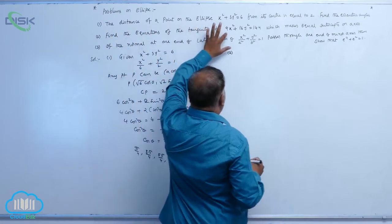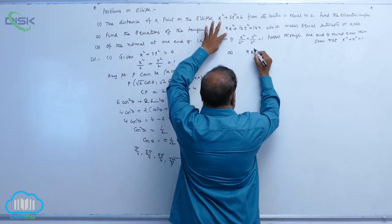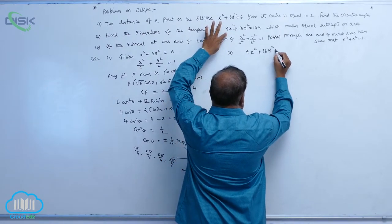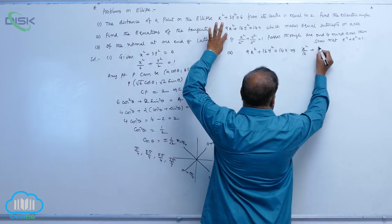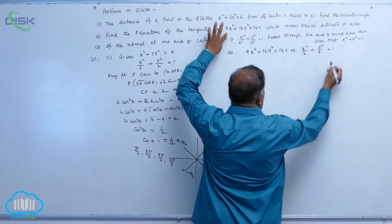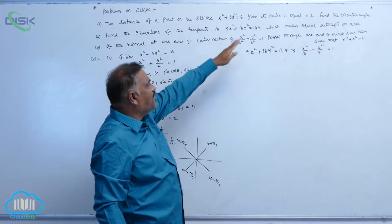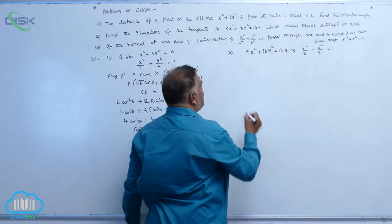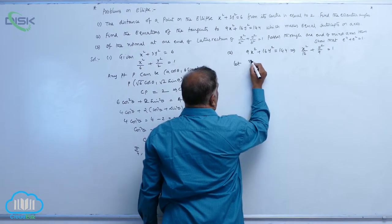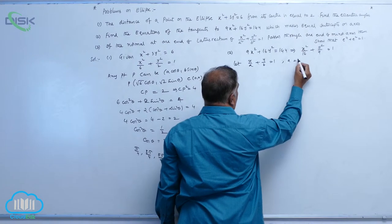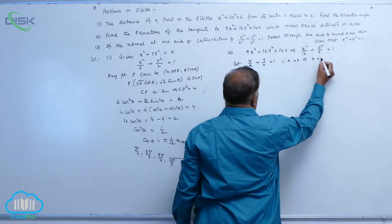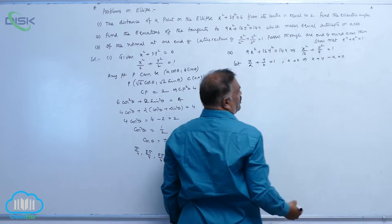Equations of the tangents - you can write 9x square plus 16y square equal to 144, can be reduced to x square by 16 plus y square by 9 equal to 1. Which makes equal intercepts? Let x by a plus y by b is equal to 1. In particular, a equal to b implies x plus y minus a equal to 0.